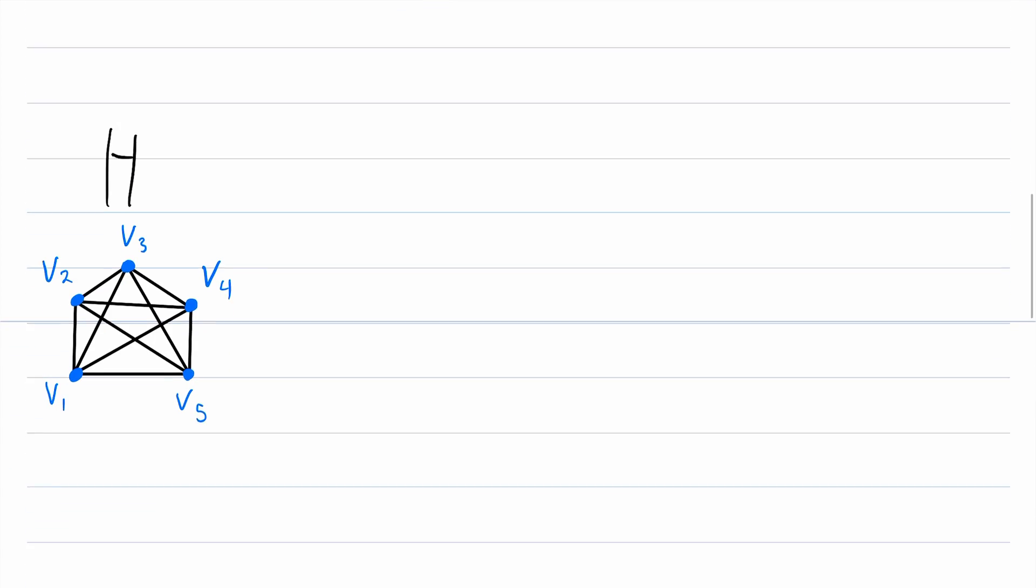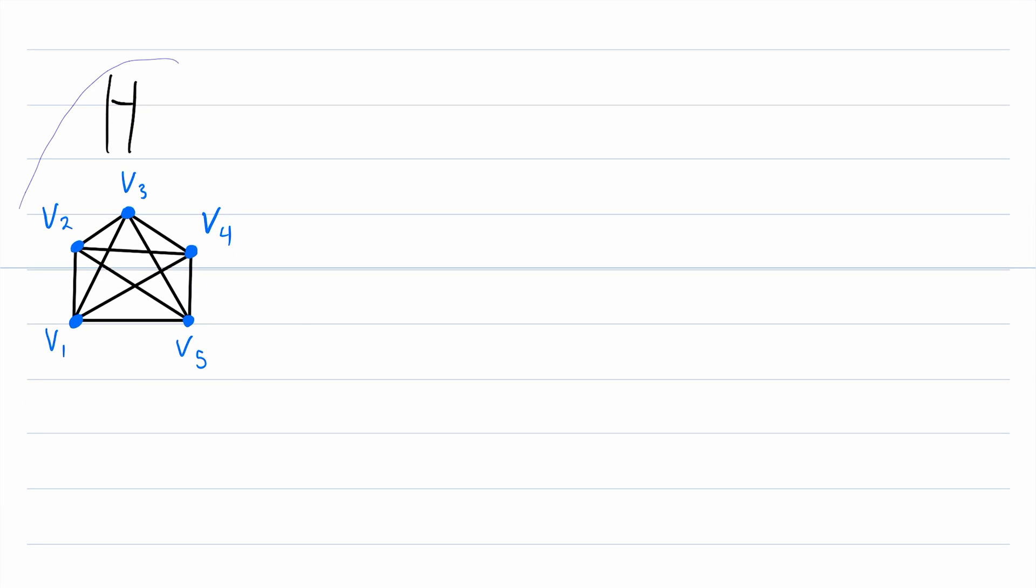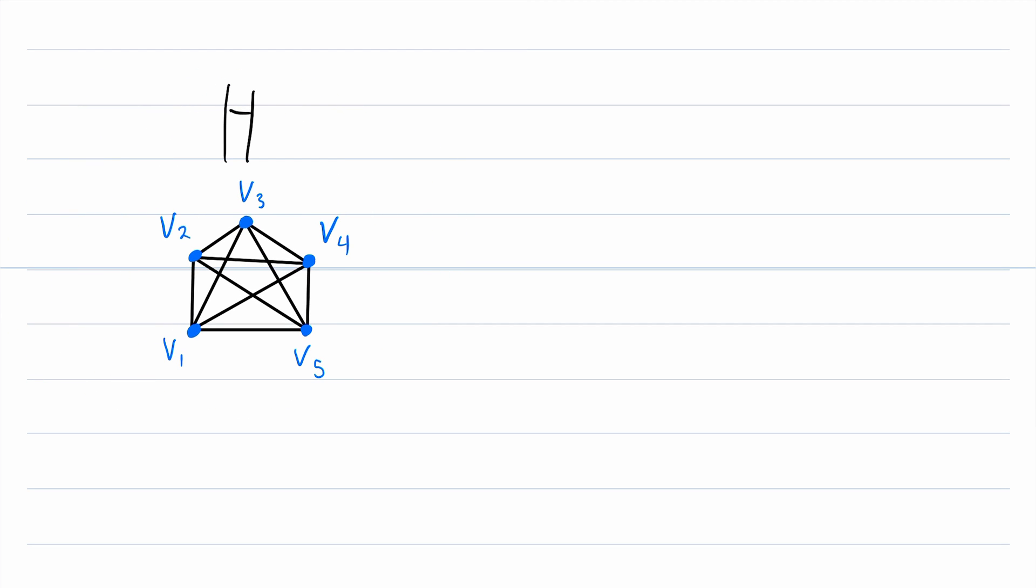With that said, let's just check out one more example. Here is a graph called H. You might notice this is a complete graph on five vertices. What graph would we be left with if we deleted the vertex V3 from the graph H? Well again, first we have to delete the vertex in question, so we'll get rid of this vertex V3.